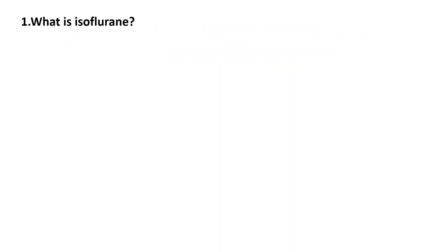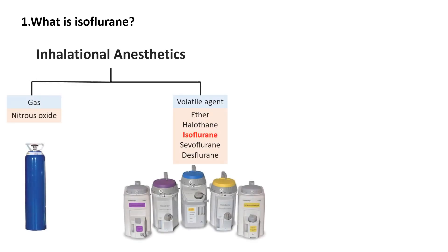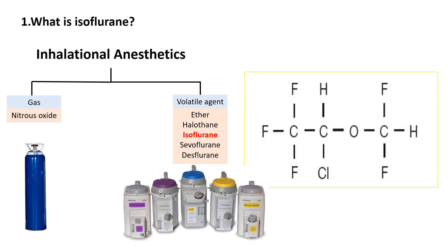Let's begin with what isoflurane is. Isoflurane is a halogenated ether volatile anesthetic used for the maintenance of general anesthesia. This is the chemical formula of isoflurane. It contains carbon, hydrogen, chlorine, fluorine, and oxygen atoms.